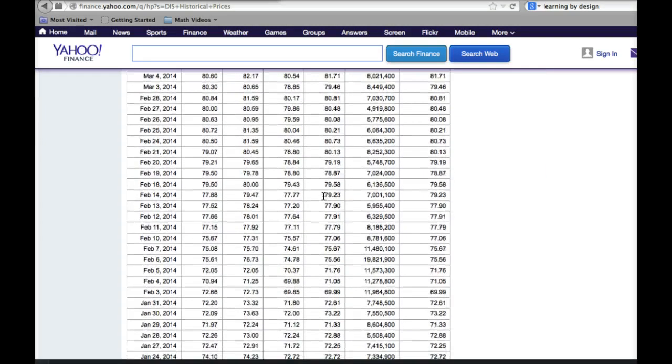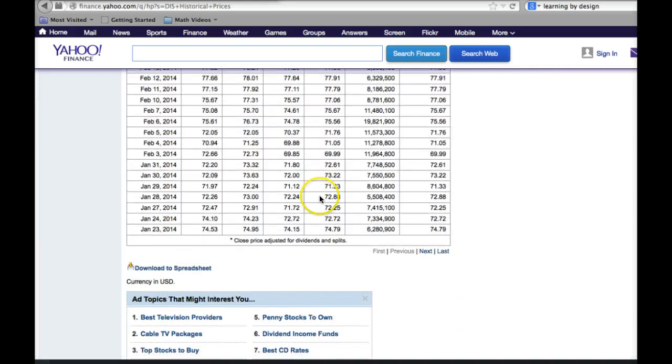Now I can scroll all the way down to the bottom and there's more information, but it's not listed here. I can go to next and last and continue to find all the stock prices. But what I want to do instead is go to download spreadsheet right down here at the bottom. This will take all this information and load it into a spreadsheet for me. So that's what I'm going to do. I'm going to go ahead and click on download to spreadsheet.